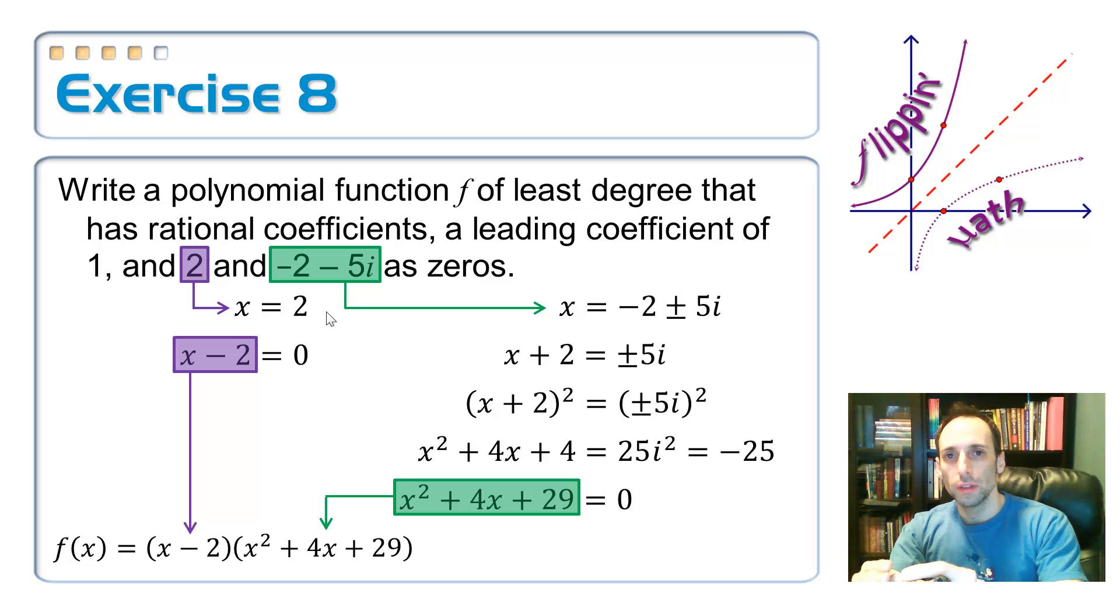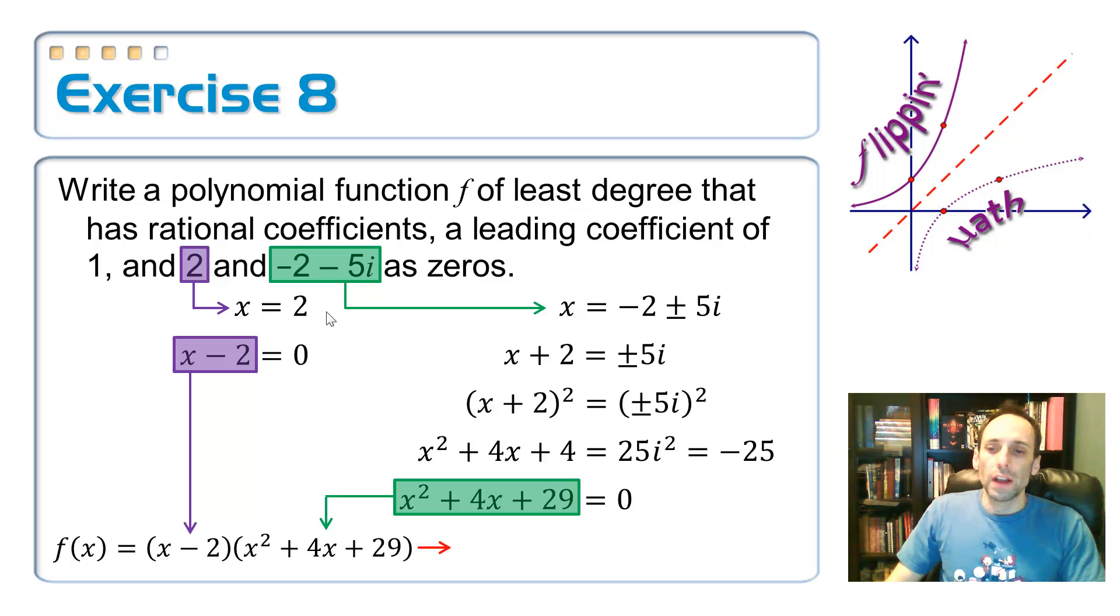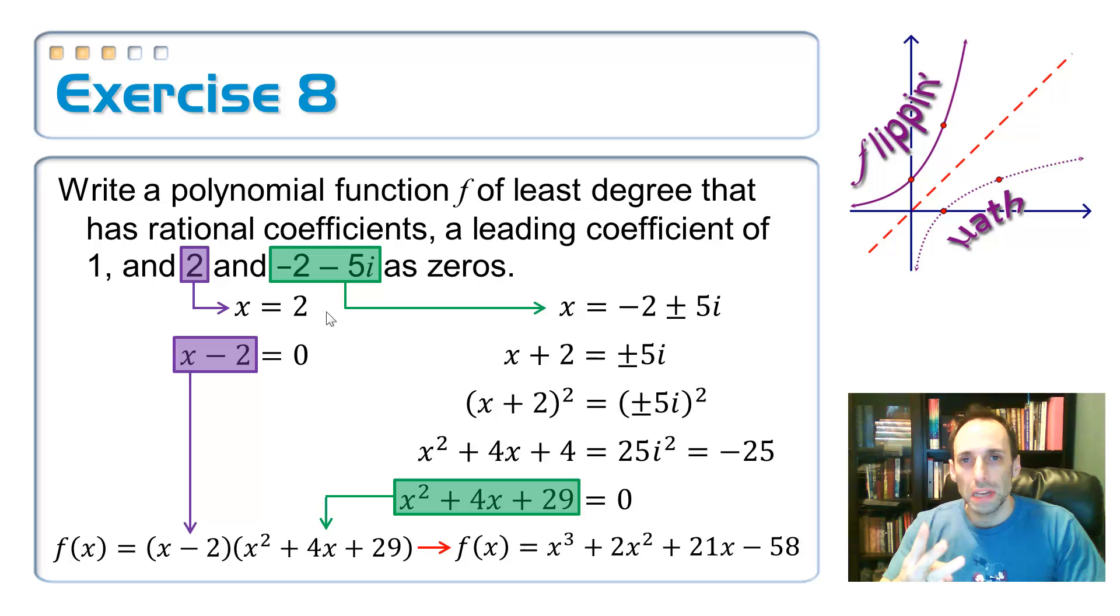Put those two things together and then just expand it out. Foil the whole thing out. Multiply it out. So here's your final answer. Your final function is f of x equals x cubed plus 2x squared plus 21x minus 58. If you were to solve this, you would get three answers. One of them would be the real number 2. And that would be the only place where it crosses the x-axis. The other two are imaginary. Negative 2 plus 5i and negative 2 minus 5i.